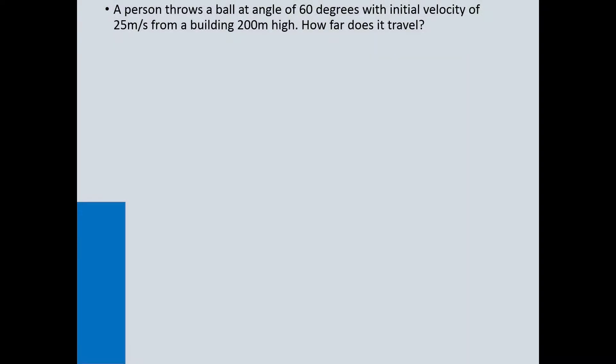Let's move on to our first example. A person throws a ball at an angle of 60 degrees with an initial velocity of 25 meters per second from a building 200 meters high. How far does it travel?